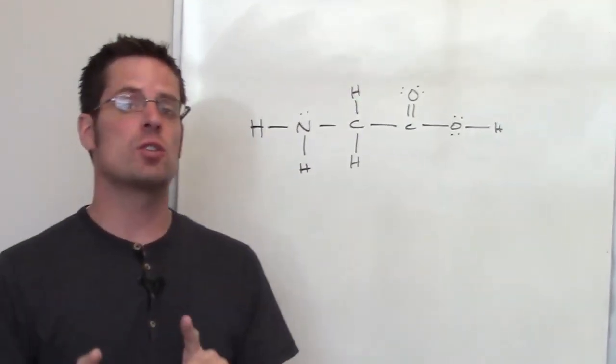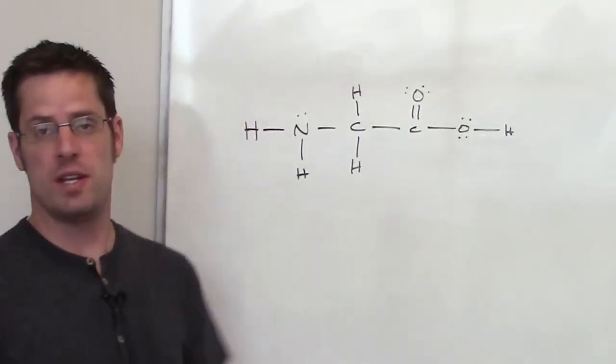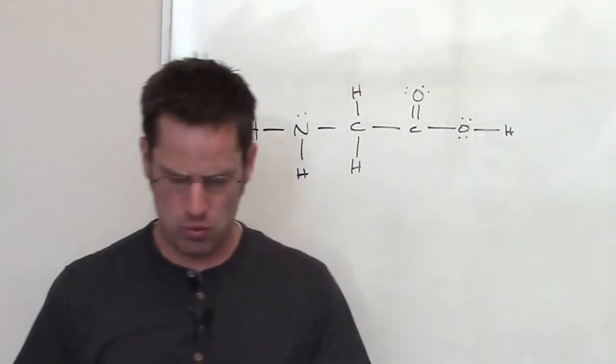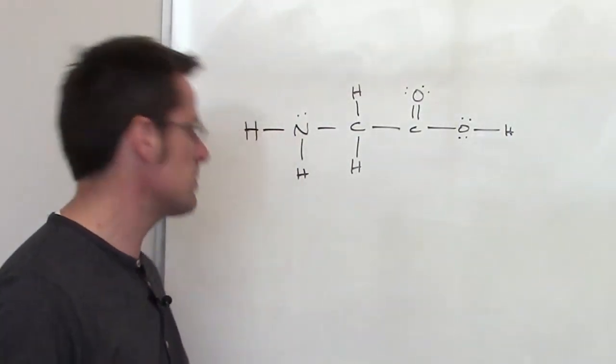This question asks us to consider the structure of glycine shown here. It first asks us what are the approximate bond angles around the two carbon atoms?